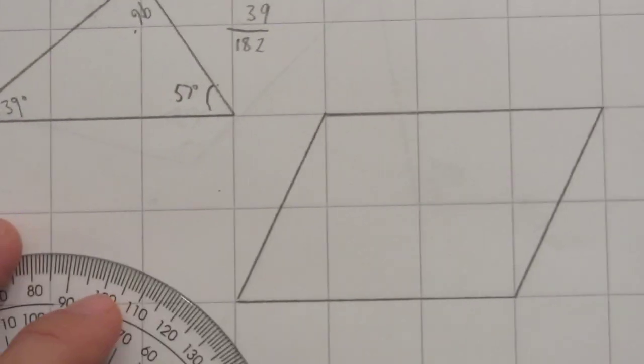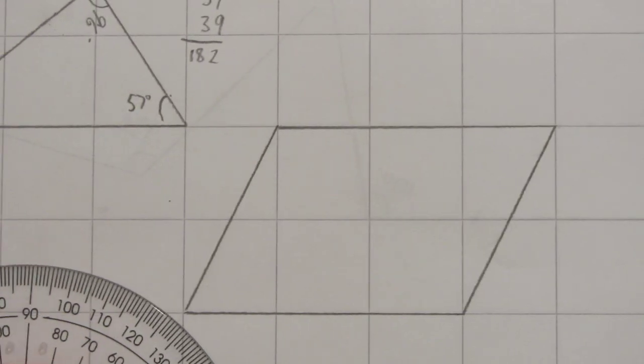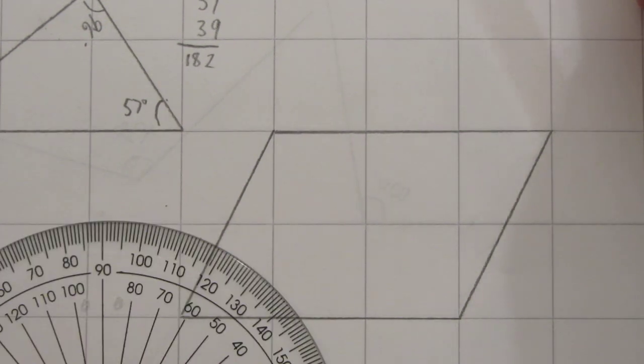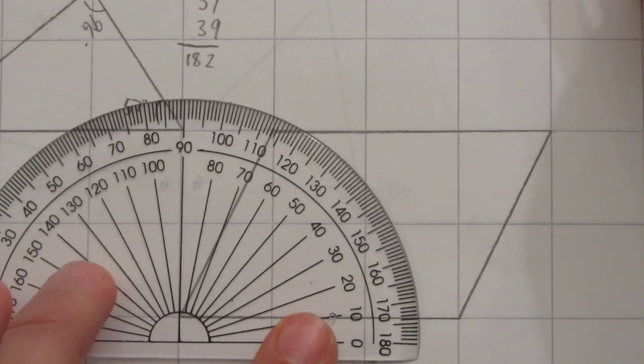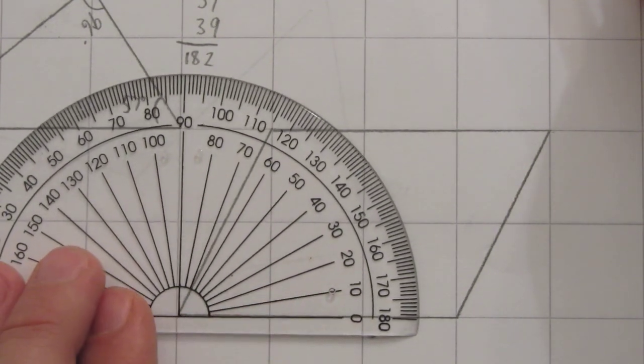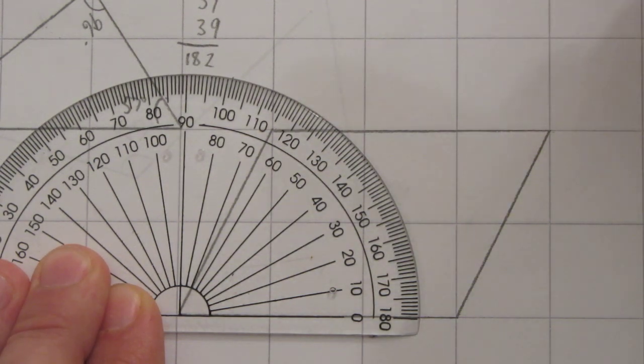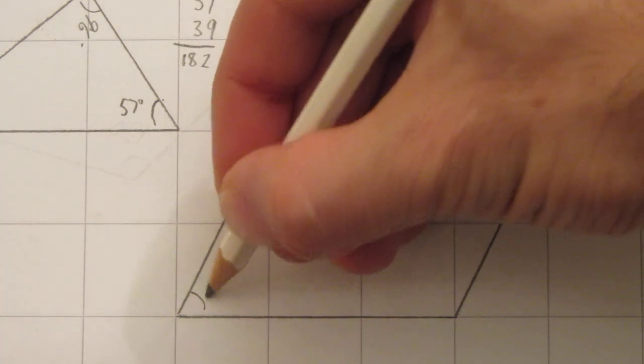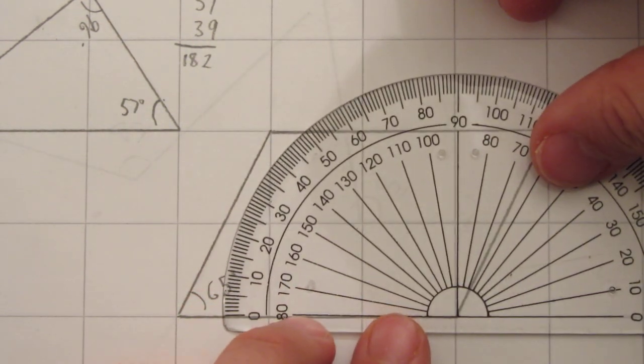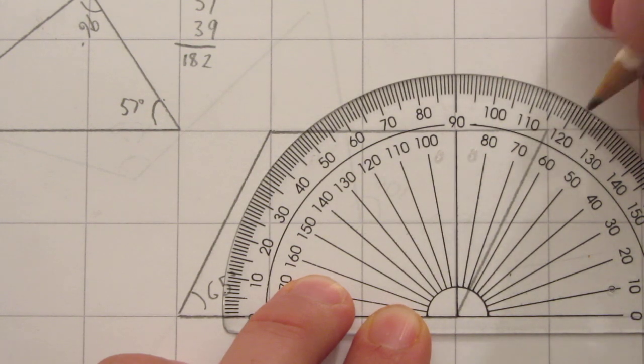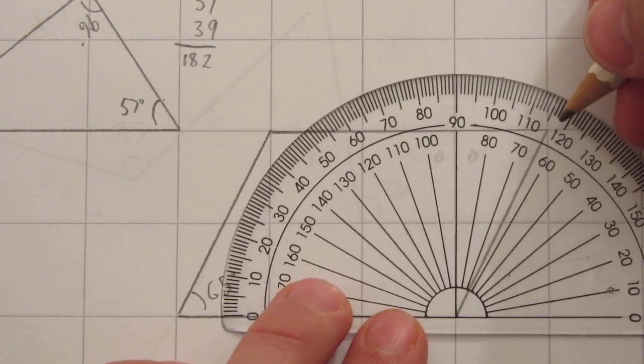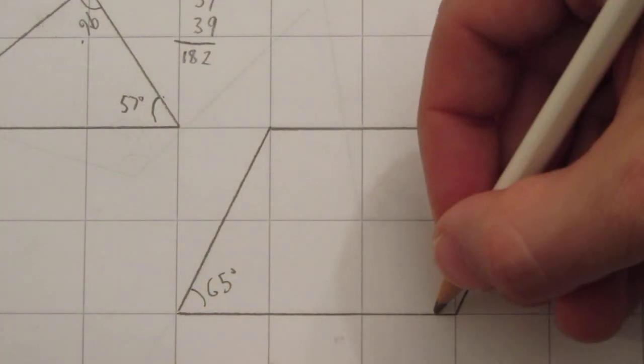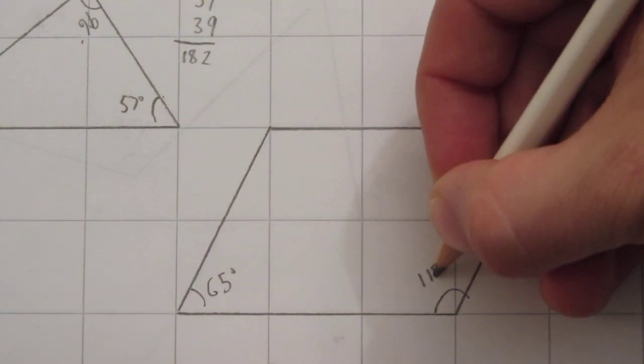Here we have a four-sided shape or a quadrilateral. I'm not going to tell you what kind - you can probably guess. You should be able to tell from looking at it. This angle here, spot on 65 degrees. This angle over here is spot on 115 degrees.